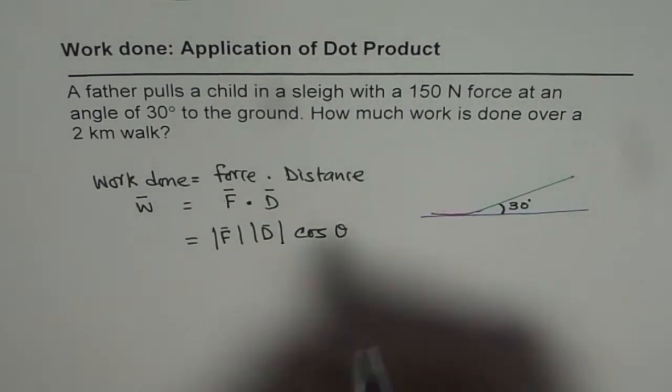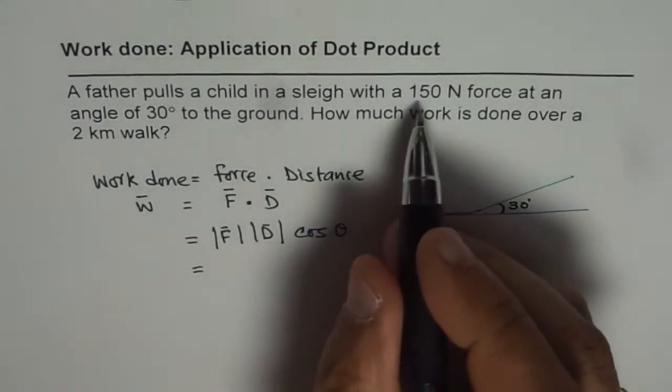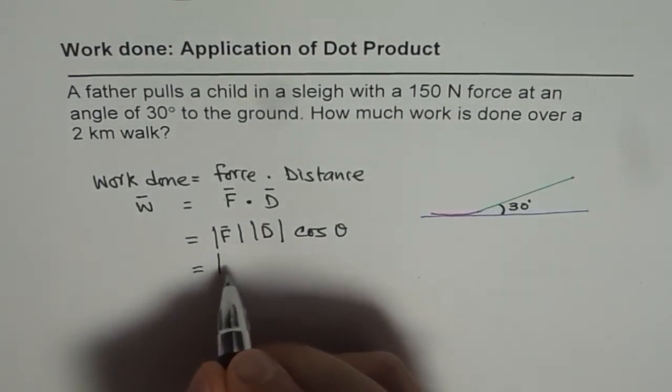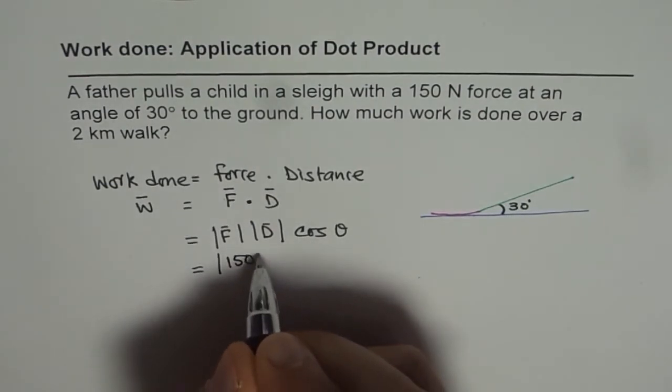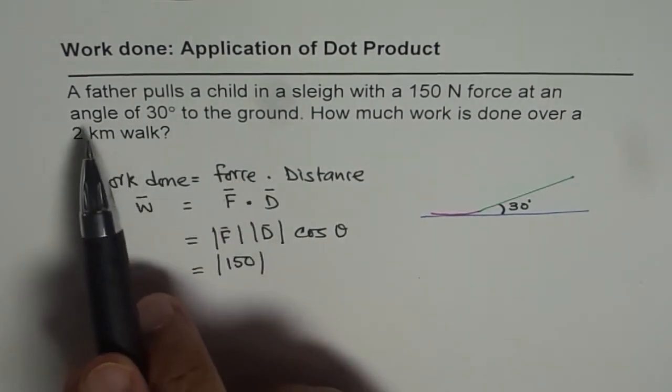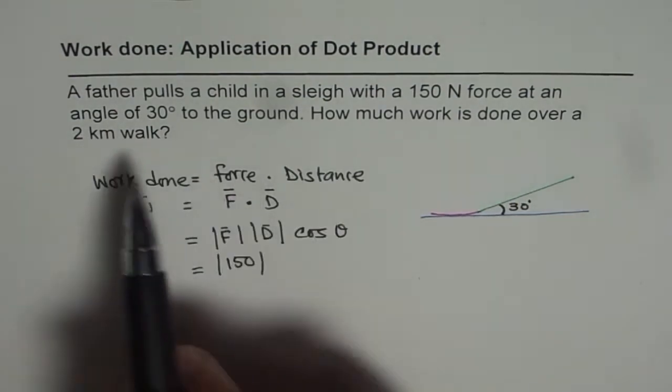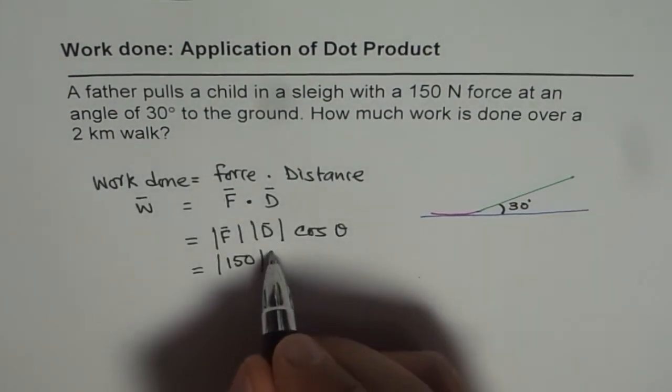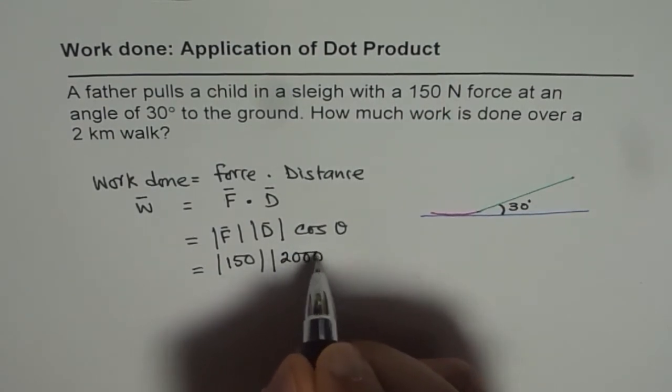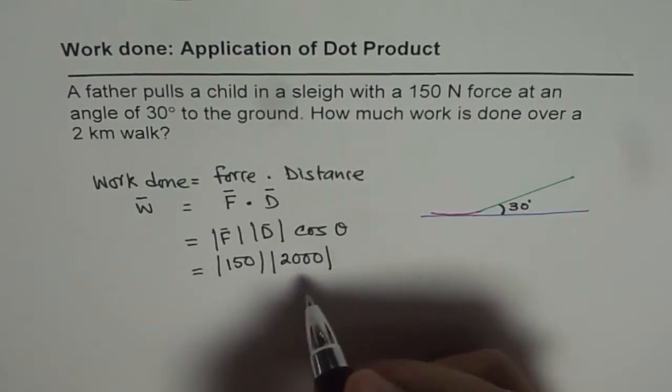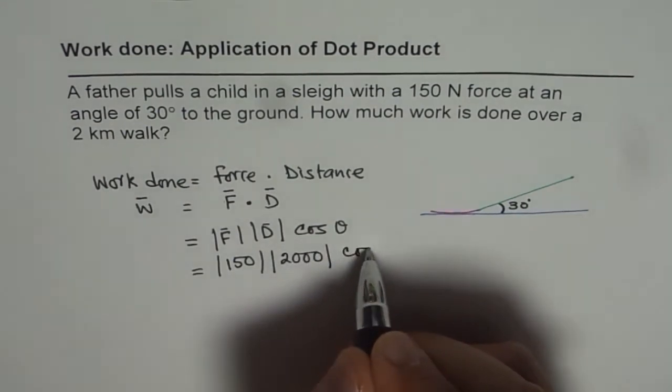Now what we are given here is force of 150 newtons, angle is 30 degrees and distance is 2 kilometers. So we need to write distance in meters, which is 2,000. Absolute value I am just writing as |F||D| cos 30 degrees.